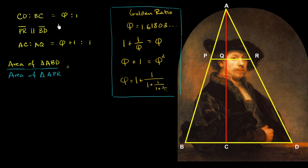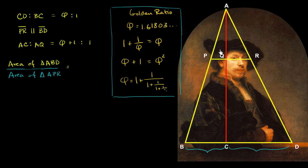We'll see that the ratio between the smaller triangle and the larger triangle involves phi. Here's what we know about this painting: the ratio between the length of segment CD and BC is phi to 1. So if you drop an altitude from the larger triangle, the ratio of CD to BC is phi. Clearly Rembrandt probably thought about this. We also know that PR is parallel to BD — we've constructed it that way.